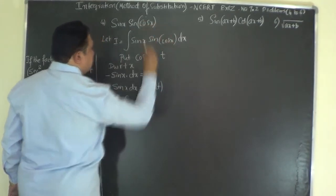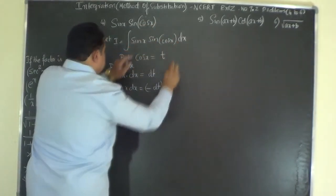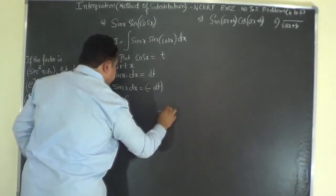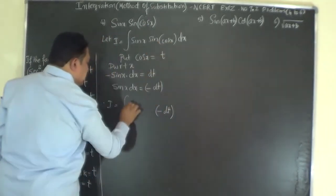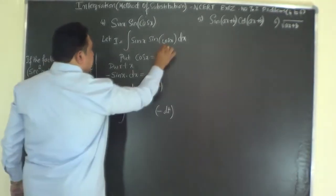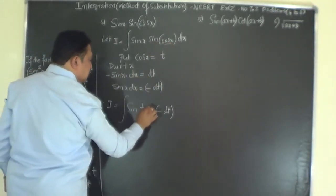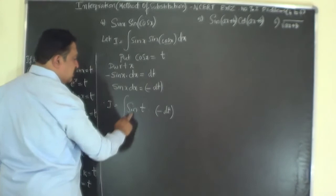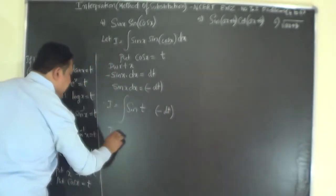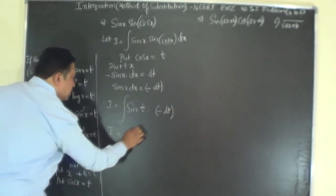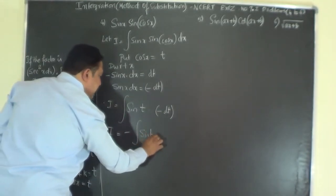Coming back to the problem, I equals the integral of sin(x) dx · sin(cos x). We replace sin(x) dx with minus dt and cos x with t, giving minus sin(t) dt. Taking the minus outside the integral sign, it becomes minus ∫sin(t) dt.